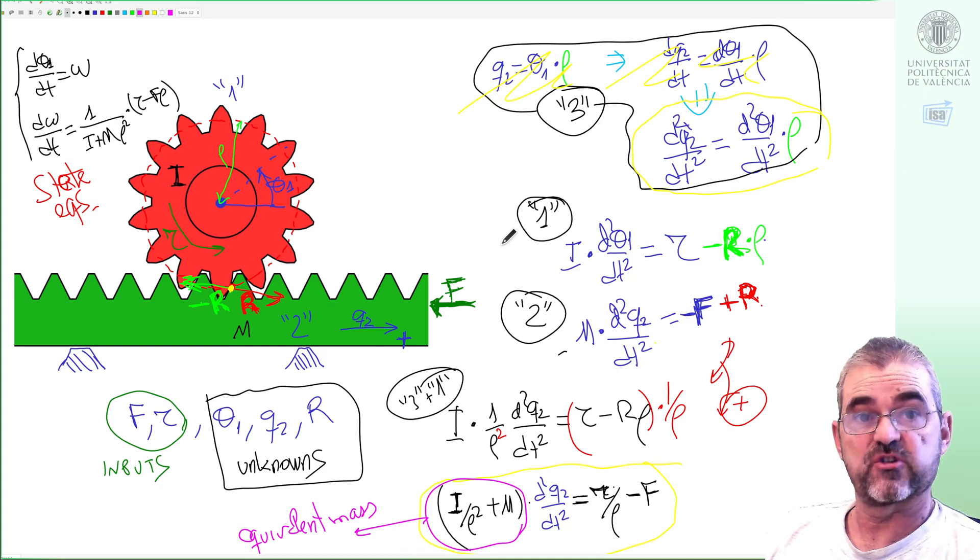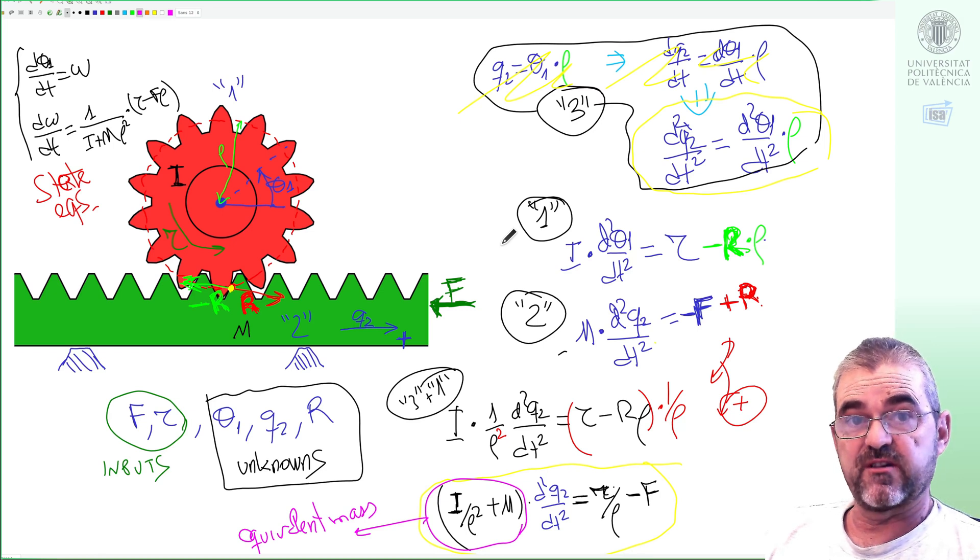So we end the video here summarizing that in this mechanical system there is only one degree of freedom, so we can express it as seen by the rotational side or as seen by the green translational side. Both expressions are equivalent. In the former case we had an equivalent moment of inertia I plus m rho squared. In the latter case we had an equivalent mass m plus inertia divided by rho squared.